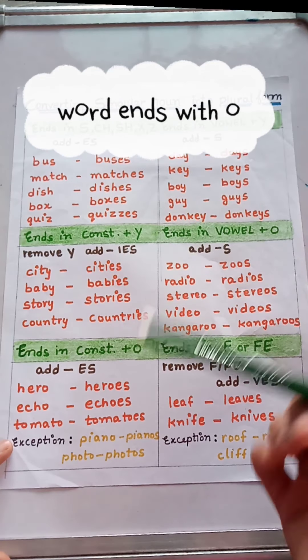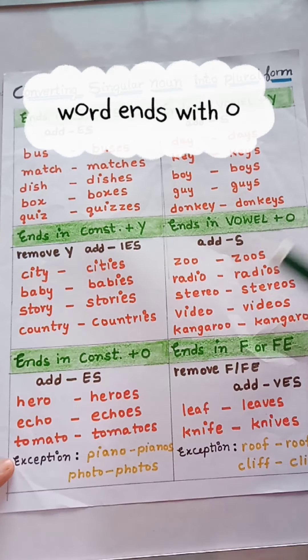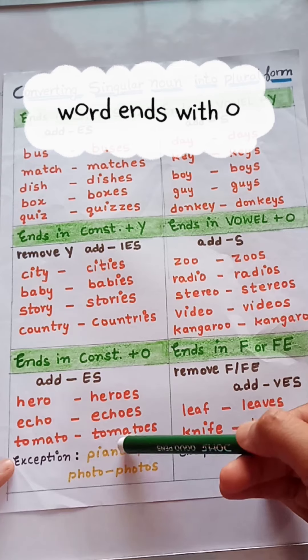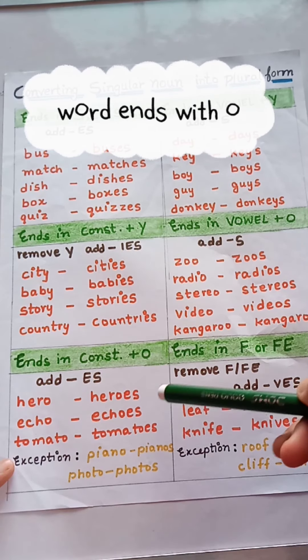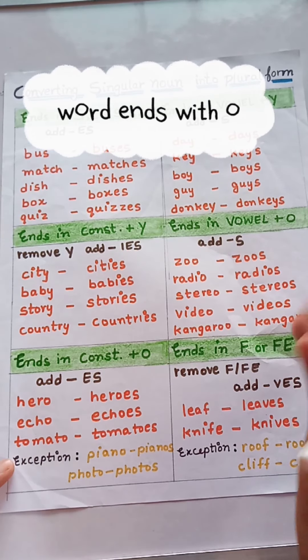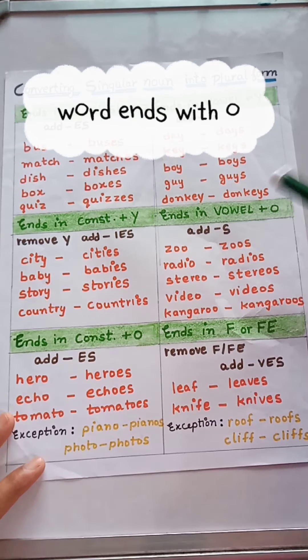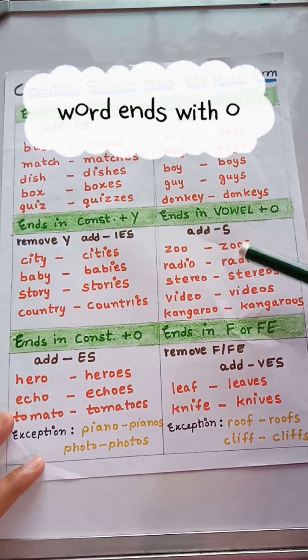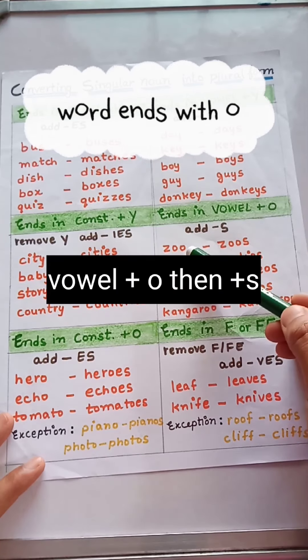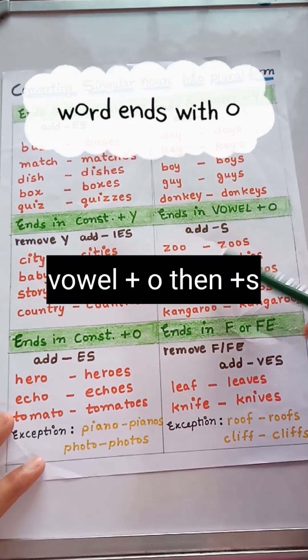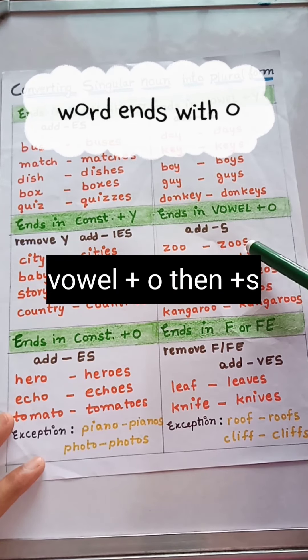There is an exception: in piano and photo we always add s, not es. And when the word ends with vowel plus o, then we also add s.